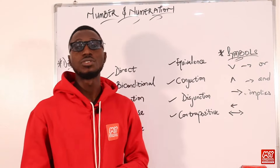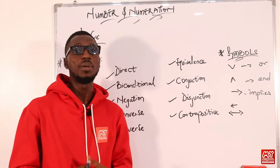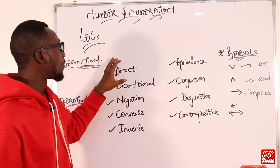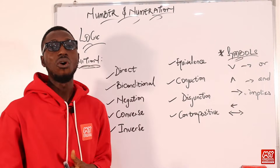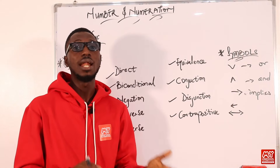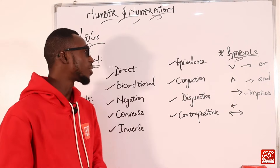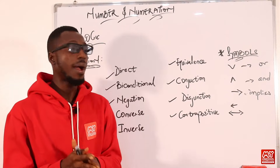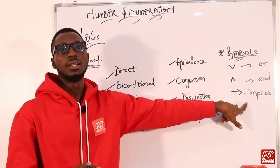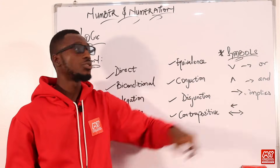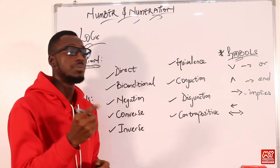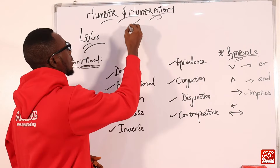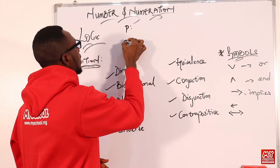Now let's go to some operations we should be familiar with in the topic logic. First, we have what we call the direct or conditional statement, also called an implication. This tells you about statements being brought together by the sign of implication. You can show or identify a statement using letters — so let's say I am using letters P and Q.